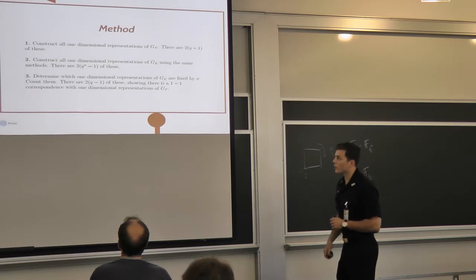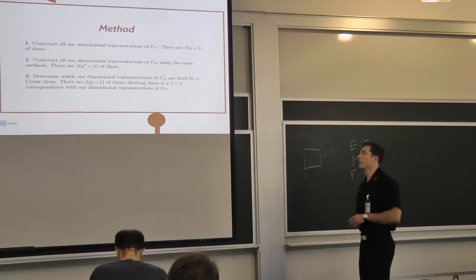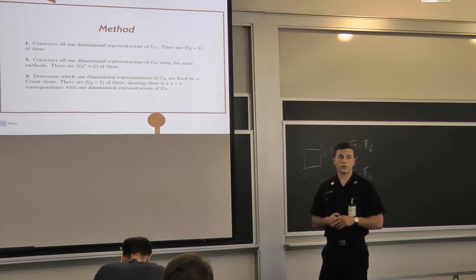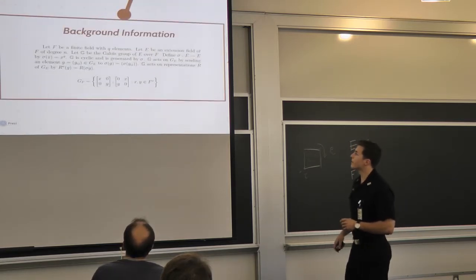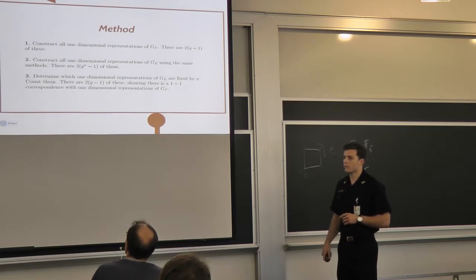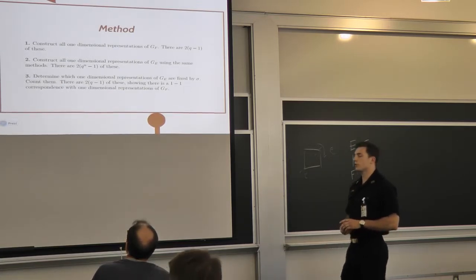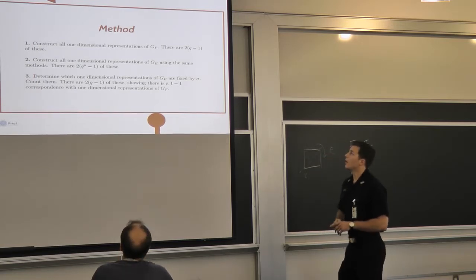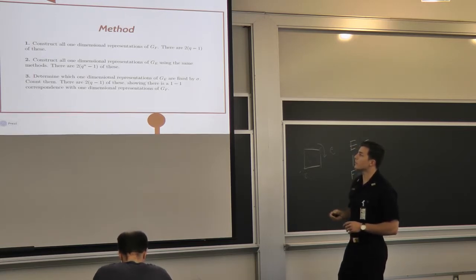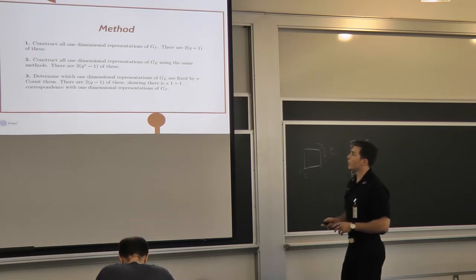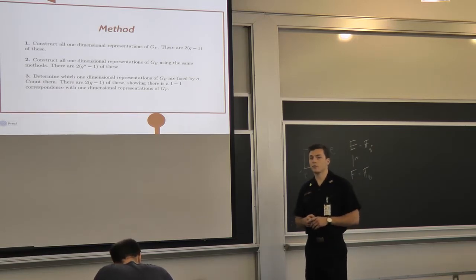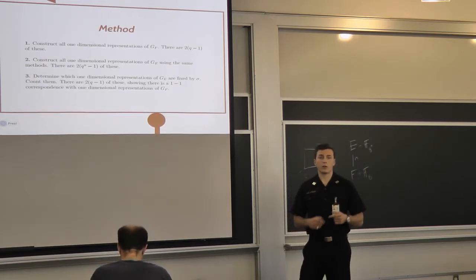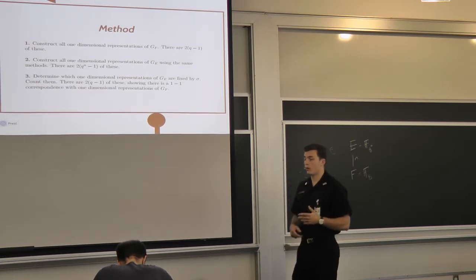So how do we do it? We first start off by constructing all of the one-dimensional representations of G sub F. And then we went and constructed all of the one-dimensional representations for G sub E, and we counted each one of these. At first, it seemed like there was a discrepancy, but when we actually looked at the number of one-dimensional representations that were fixed by sigma of G sub E, it turns out that you get the same number as in G sub F. So regardless of the degree of the field extension or Q, you find that there's a one-to-one correspondence between all of the one-dimensional representations.